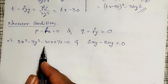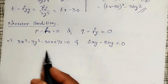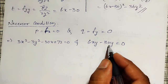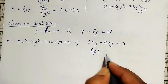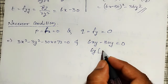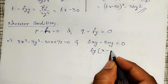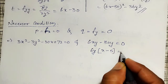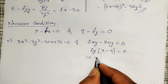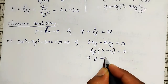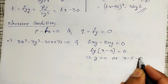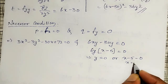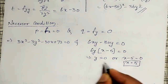I have to solve for x and y from these two equations. The first equation is a bit lengthy, so I will simplify the second one first. From 6xy - 30y = 0, I can take 6y as a common factor, giving 6y(x - 5) = 0, which implies either y = 0 or x = 5.